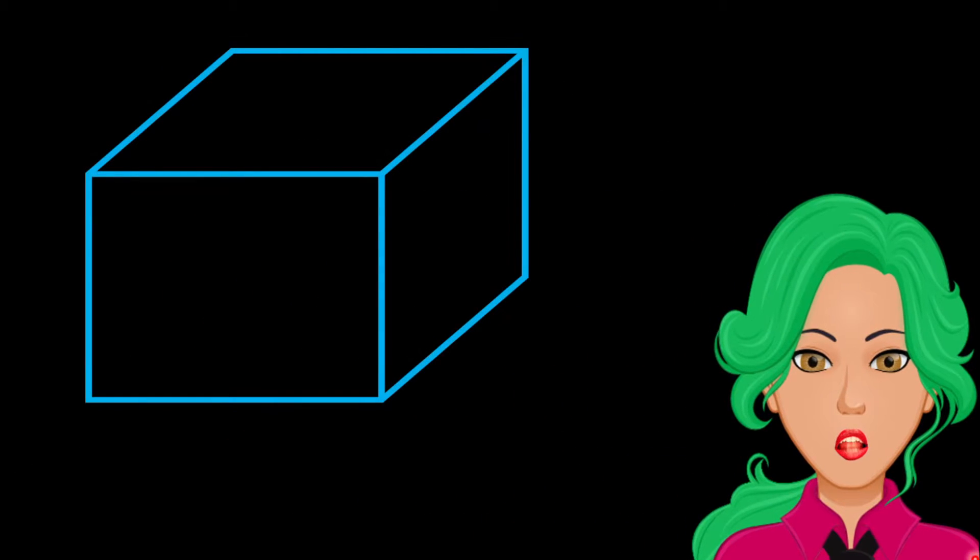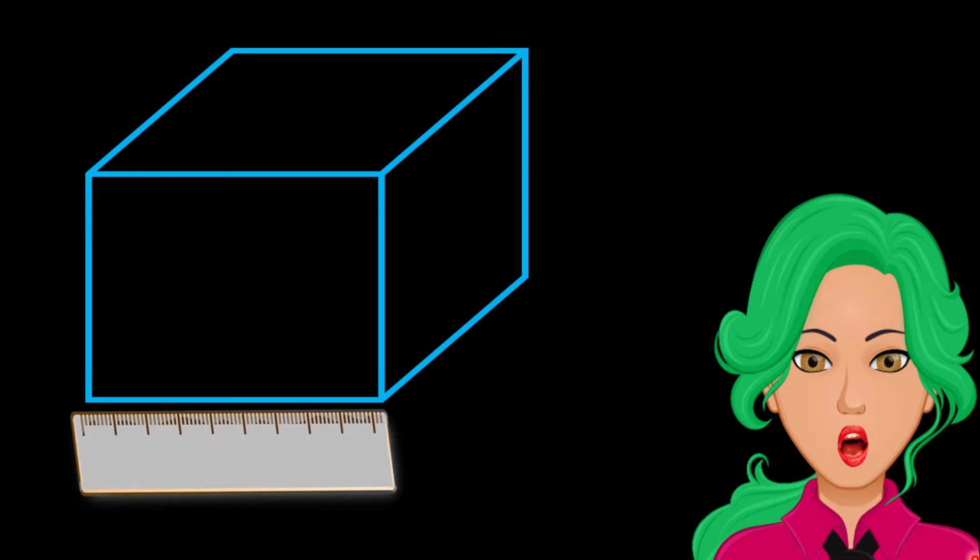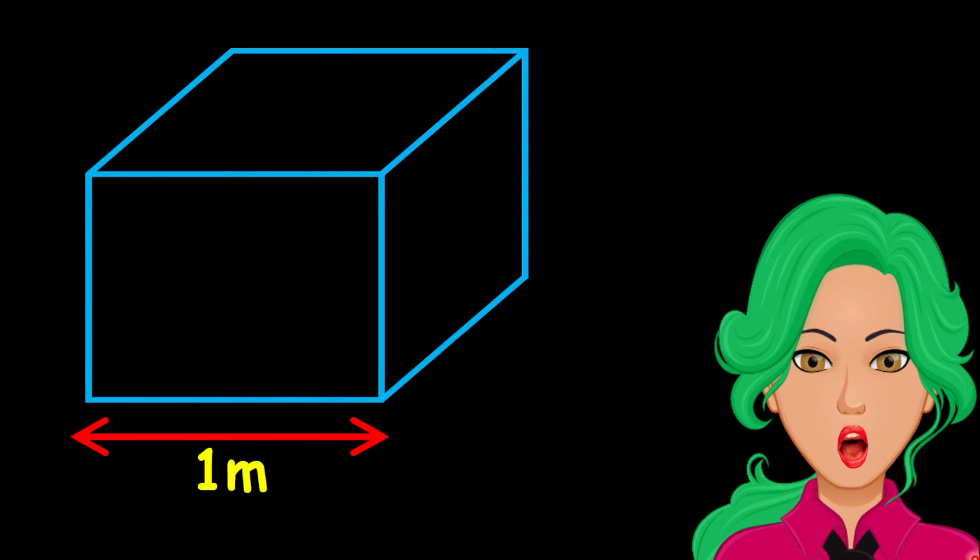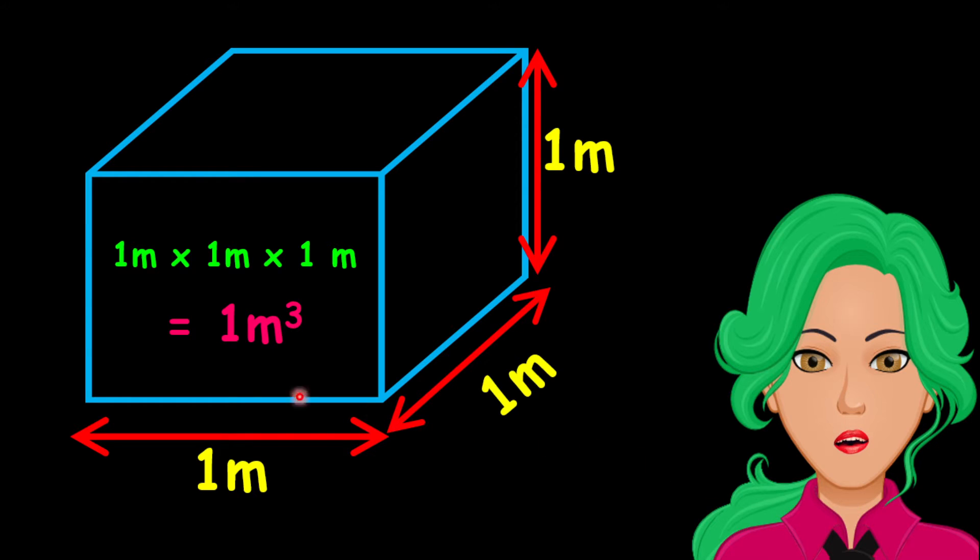If we measure a large cube with all its sides measuring one meter, we can actually prove this. If the length is measured to be one meter, the width is measured to be one meter, and the height is measured to be one meter. Therefore, we can find the volume by working out one meter multiplied by one meter multiplied by one meter. This gives us a volume of one meter cube.